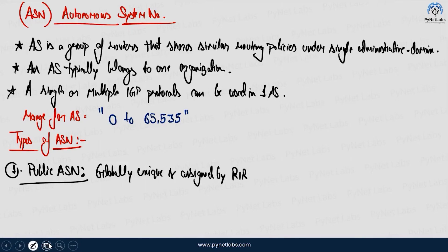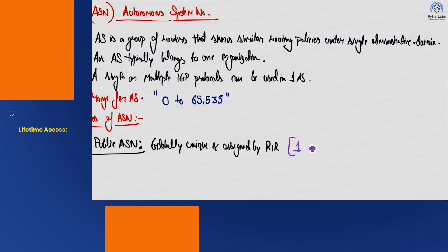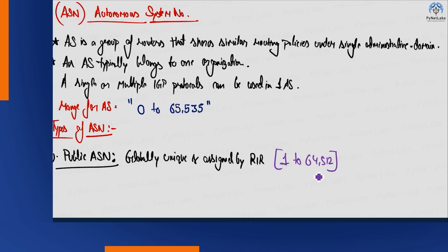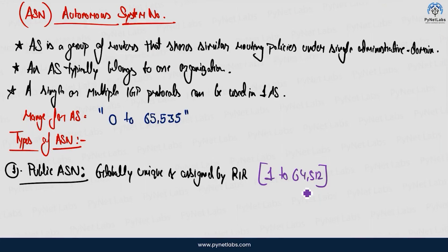So the range which is given for the public ASN is basically the ranges that it's going to start from 1, 2 and it's going to end on 64,512. So that's what the range basically we do have for this particular public ASN, which we do have now talking about the range.